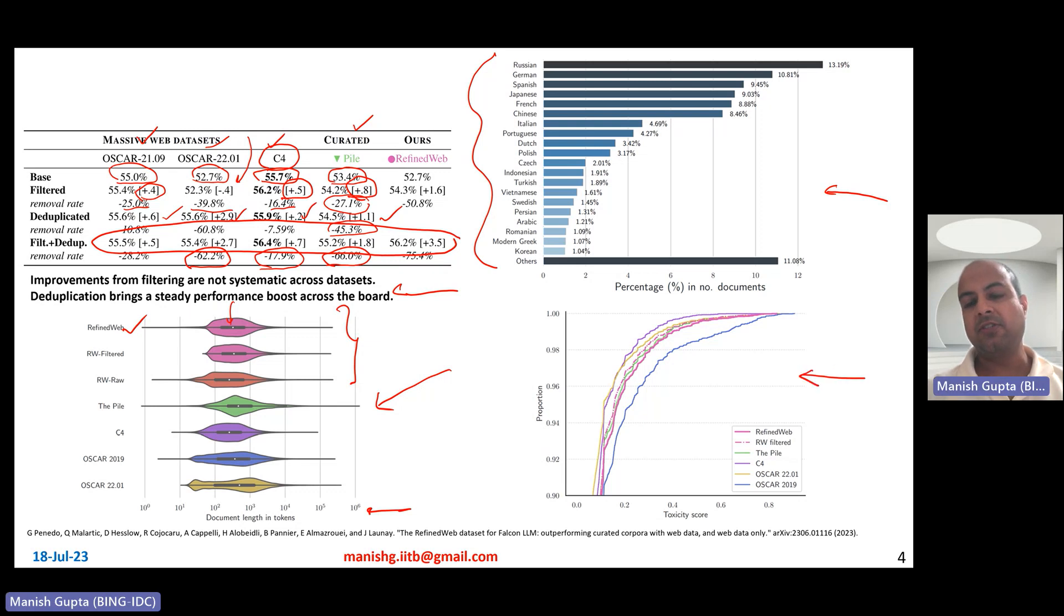Toxicity score wise, they also experimented by taking documents and then putting them up on perspective API and measuring the toxicity. And what you observe is that the toxicity of the refined web corpus is more or less, the variation in toxicity score across the entire collection is more or less in line with the other public corpora like the pile, C4, and OSCAR.